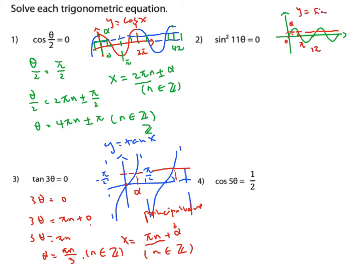For y equals sine x, x as the general solution equals nπ plus (−1)ⁿ · α. When n equals 0, (−1)⁰ equals 1, so you add alpha. When n equals 1, that's π, and (−1)¹ gives minus alpha. When n is even (like 0, 2, 4π…), you add the principal value; when n is odd (like π, 3π…), you minus it. So the general sine solution is x = nπ + (−1)ⁿ · α, where n is an integer.